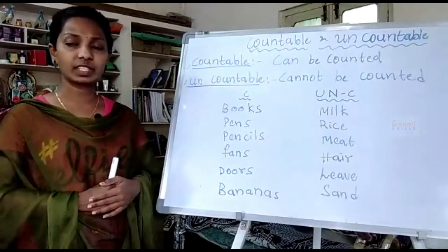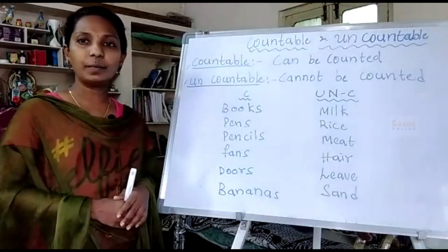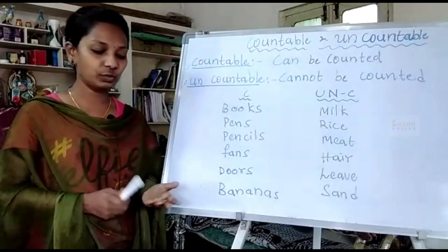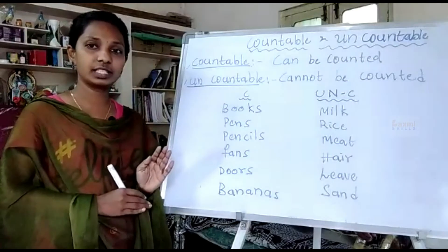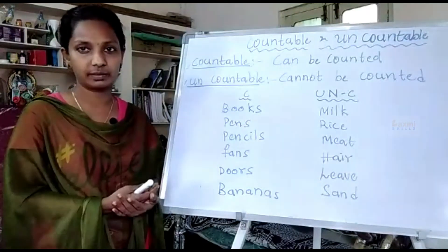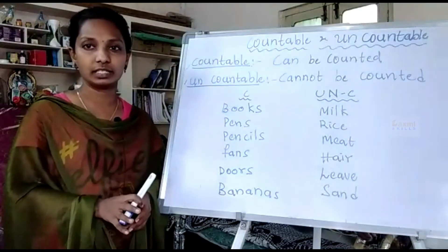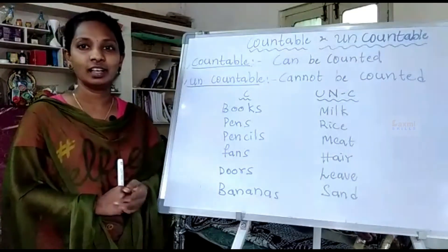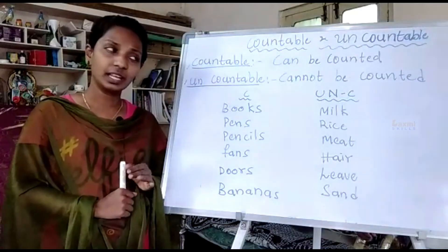Pencils are countable — 'Give me three pencils' or 'give me a blue pencil, black pencil, yellow pencil.' They are mentioned with specific things but never in an uncountable mass. For uncountable, take meat: we say one kg or two kg of meat. These are things we come across in daily life and are easy to remember.